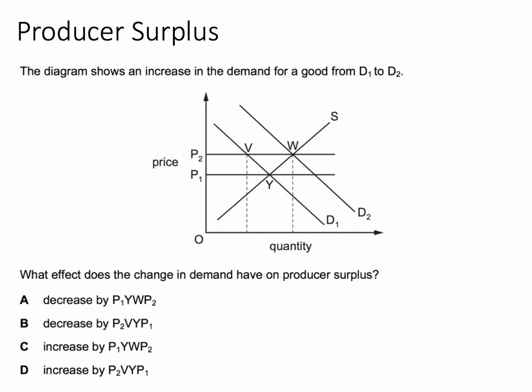So here's the question. The diagram shows an increase in demand for a good from D1 shifting out to D2, and the question is what effect does the change in demand have on producer surplus?